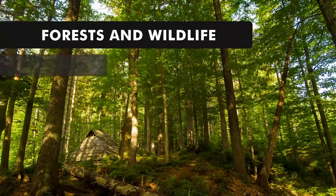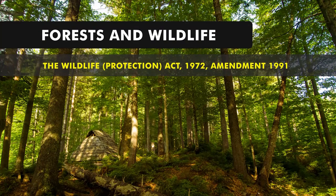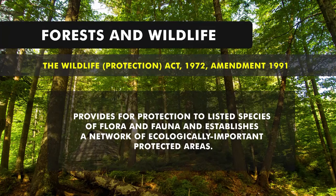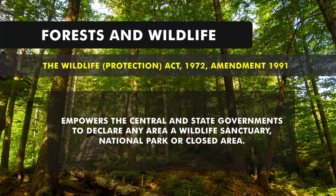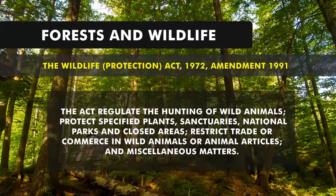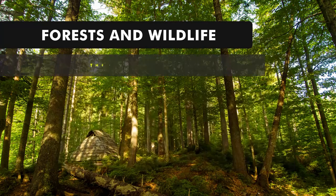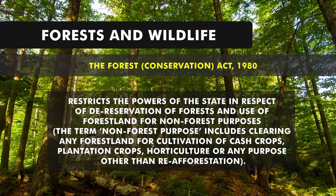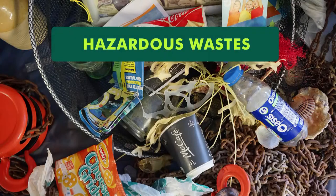For forest and wildlife, the Wildlife Protection Act 1972, amended in 1991, provides protection of listed species of flora and fauna and establishes a network of ecologically important protected areas. It empowers state and central governments to declare any area as a wildlife sanctuary, national park, or closed area. It also regulates the hunting of wildlife, protection of specific plants and sanctuaries, national parks, closed areas, and restricts trades and commerce of wild animals and animal articles. The Forest Conservation Act 1980 restricts the powers of the states in respect to de-reservation of forest and use of forest land for non-forest purposes, including clearing forest land for cultivation of cash crops, plantation crops, horticulture, or any purpose other than re-forestation.